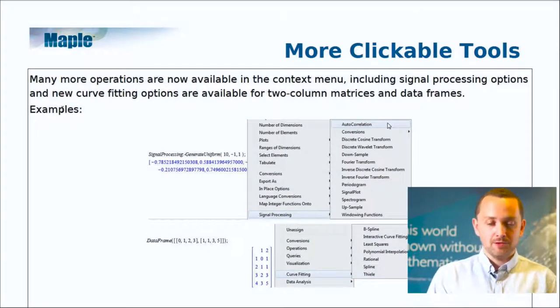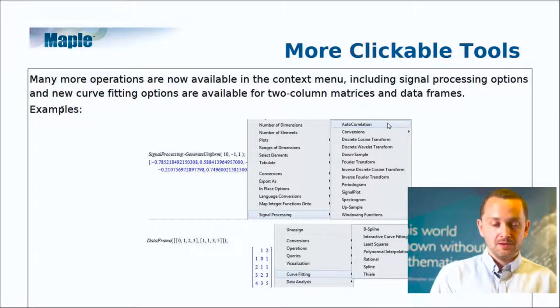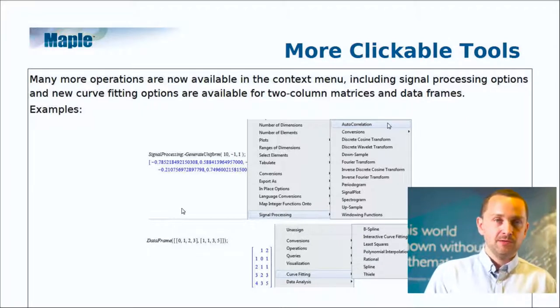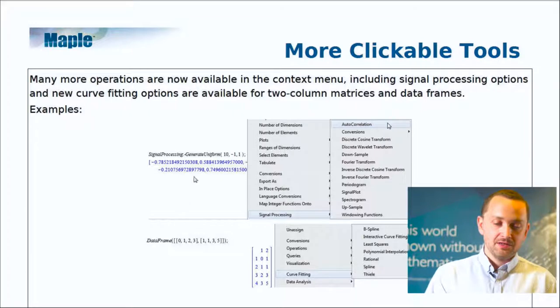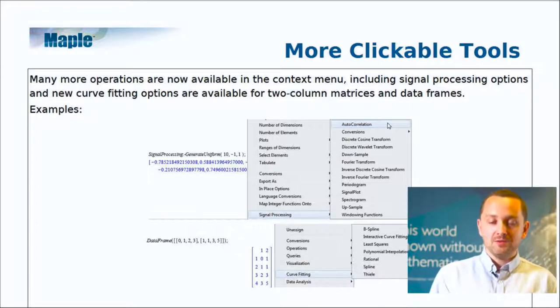Clickable tools — the context menu is one of the best ways to make it easy to access the Maple library and language. For this release, we've added the full signal processing package as well as curve fitting options for two-column matrices and data frames to the right-click context menu. If you have a signal or a data frame, you can right-click and apply a wide variety of tasks directly to that expression — like an autocorrelation function for a signal, or curve fitting on a data frame — without needing to know the underlying code.